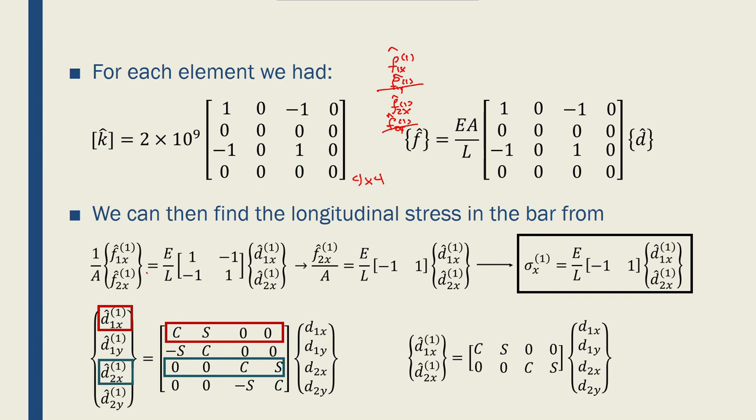Is equal to EA over L. But I've taken the A to the left hand side. And I've written [1, minus 1; minus 1, 1]. And this is the local nodal displacements. The one that we're familiar with. It's a 2 by 2 matrix.